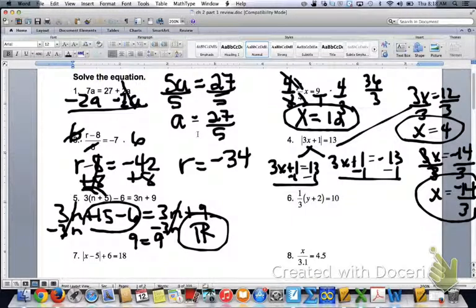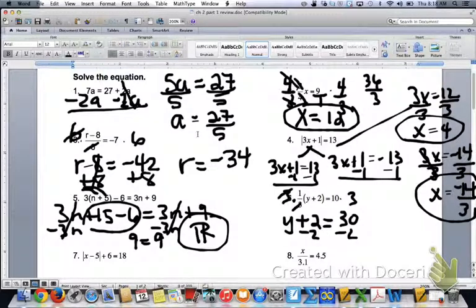Number six, 1 third y plus 2 equals 10. We can first get rid of that 1 third. If we multiply both sides by 3, that 3 cancels. Now we just have 1 times y plus 2, which is just y plus 2. 10 times 3 is 30. Minus the 2, you get y equals 28.